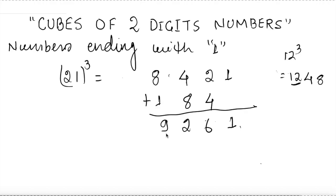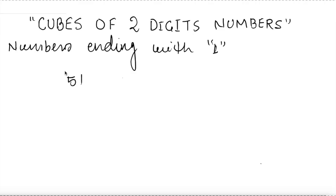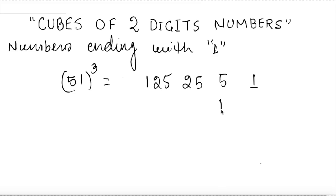For 21³: I write 21 at the right end, and since the other digit is 2, I write square of 2 = 4 and cube of 2 = 8 to the left. I leave first and last digits, double the middle two to get 4 and 8. Adding: 8 as is, 4+8 = 12 so carryover 1, giving 9, then 12 — carryover 1, so the answer is 9261.